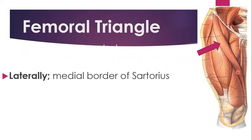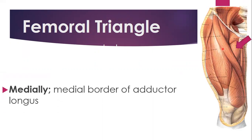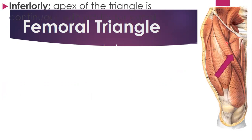The medial border of the sartorius muscle forms the lateral border of the triangle. While the medial border of the adductor longus — this medial border here — forms the medial boundary of the femoral triangle.